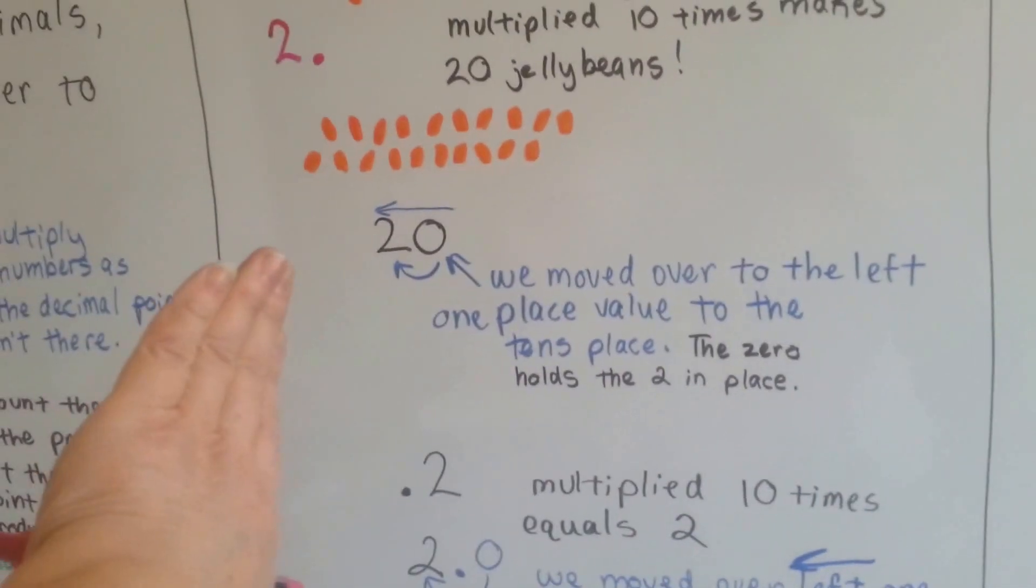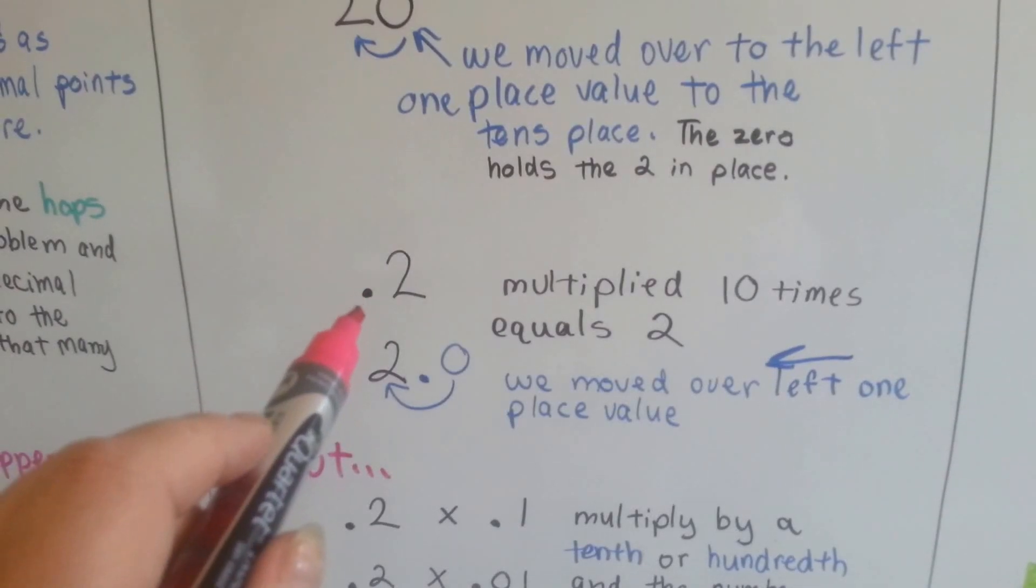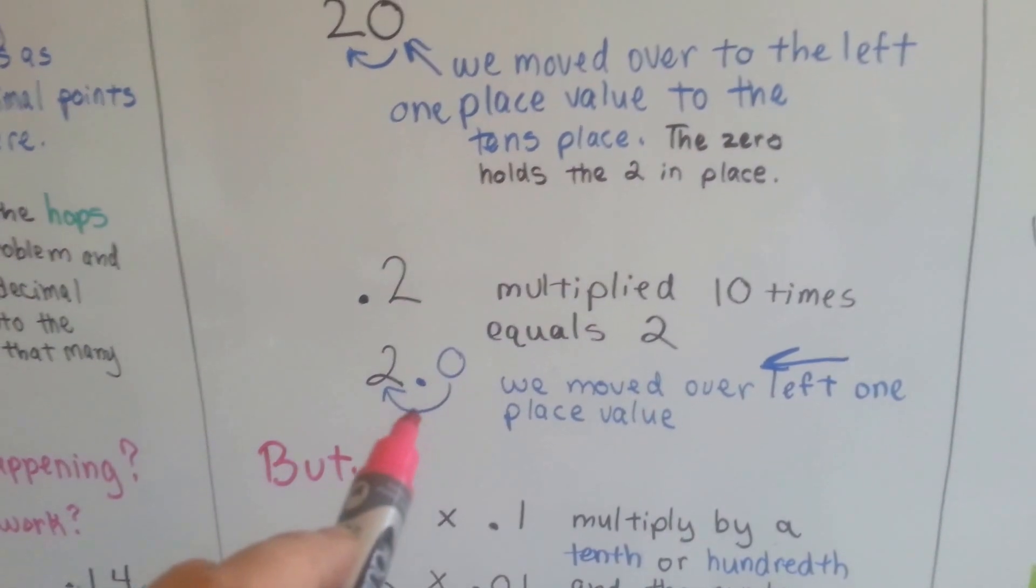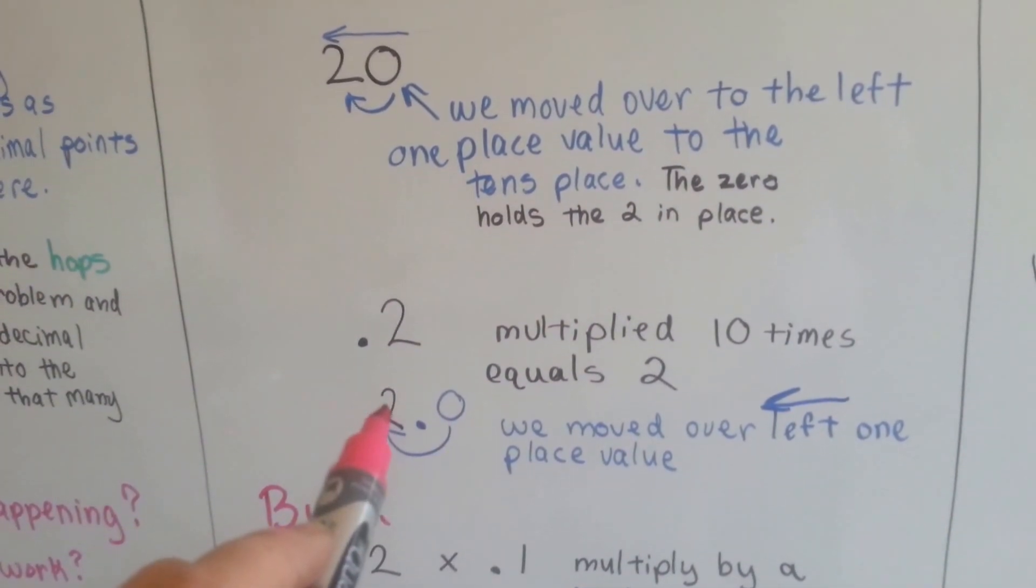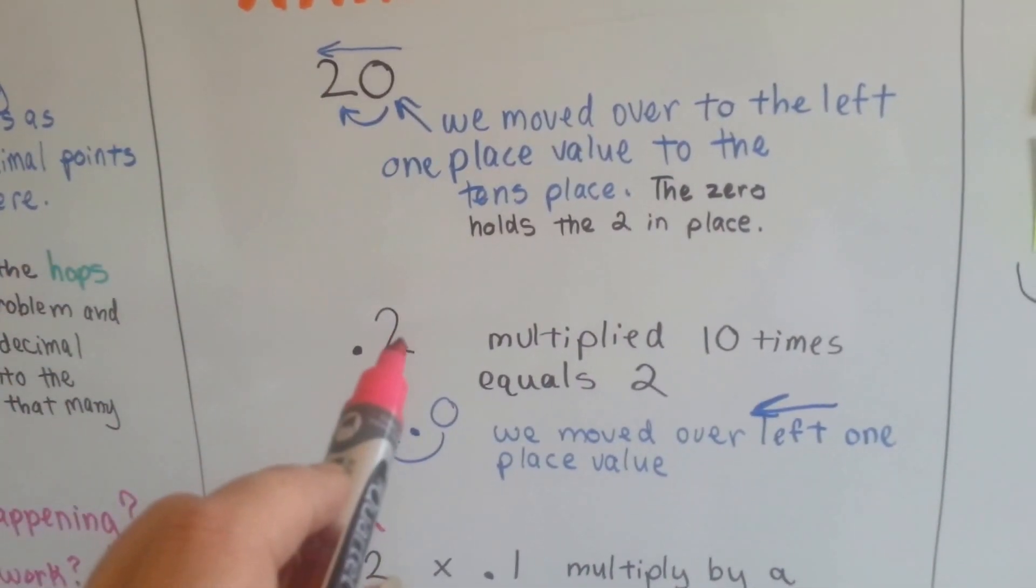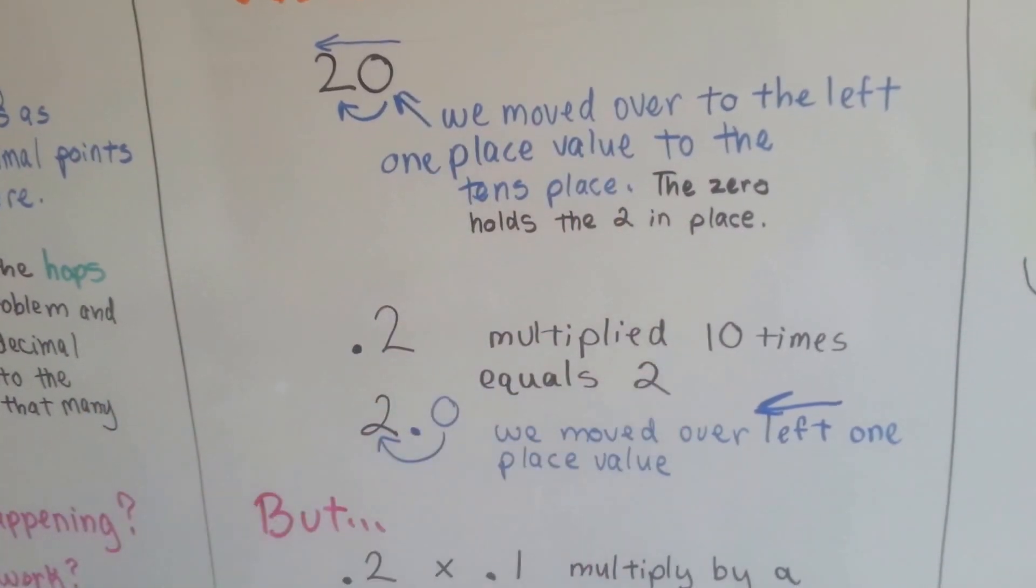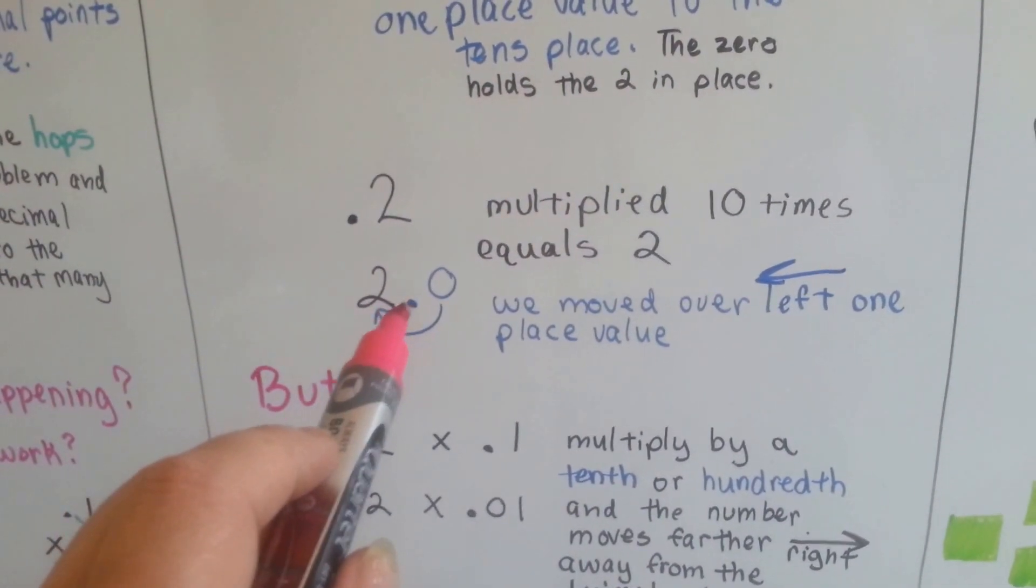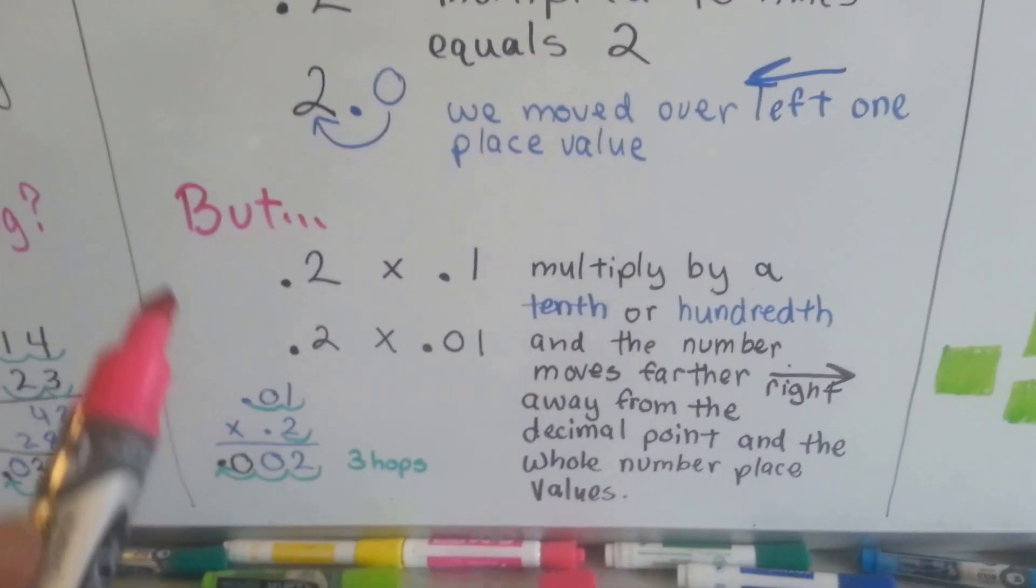Now, if we have 2 tenths and we multiply it 10 times, it's going to move it over to the ones place. It's going to move it to the other side. Just as this moved to the tens place, this 2 tenths is going to move over here to the ones place because we multiply it by 10. It gets shoved over one time. So now it's sitting up next on this side of the decimal point instead of on this side.